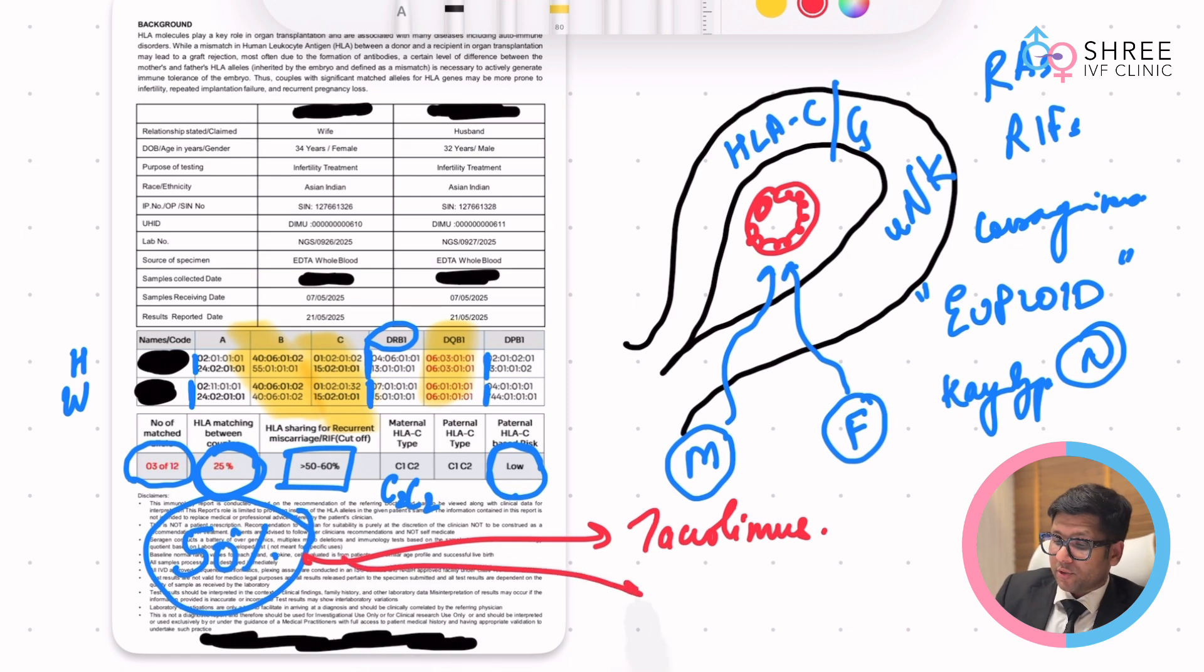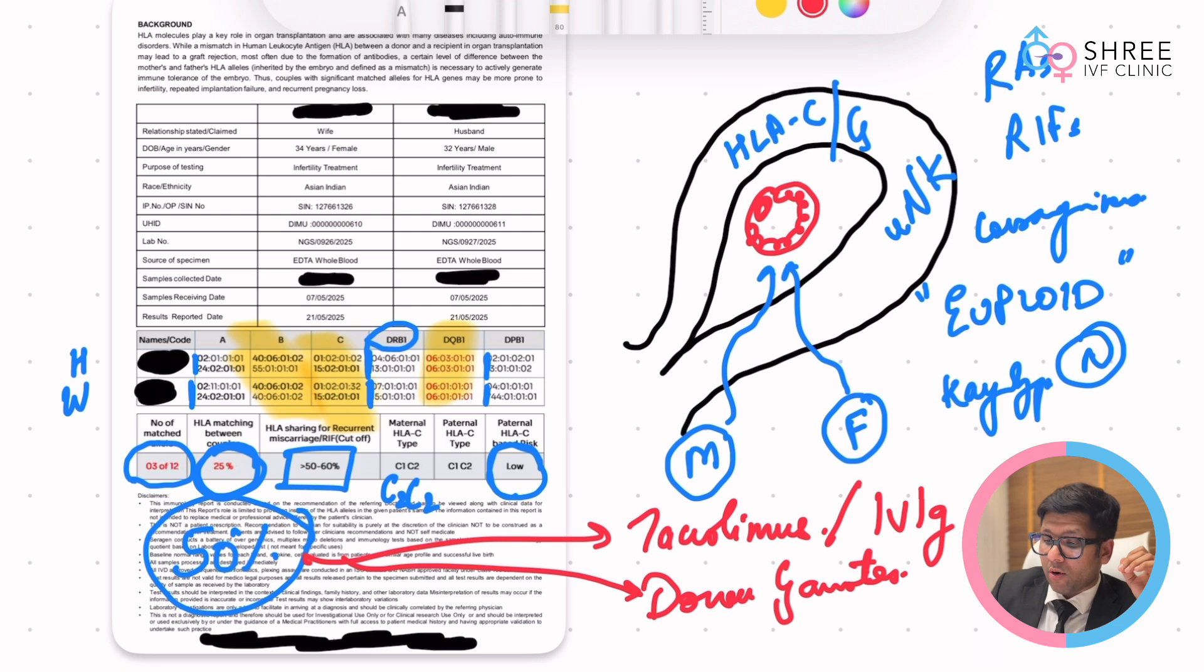Lot of times the couples in this type of situation may also be recommended to do donor gametes, that is to switch the gametes. That may be a very important alternative if the HLA matching is very severe between the couples. Simultaneously, along with tacrolimus, there is an experimental role of IVIG and thymosin in these situations.